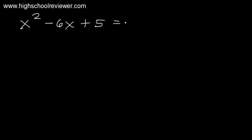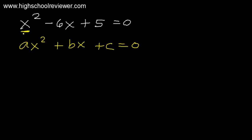Let's have an example. We have x² - 6x + 5 = 0. This is a quadratic equation of the form Ax² + Bx + C = 0, since it has a second-degree term, a term with variable x, and a constant as the last term.